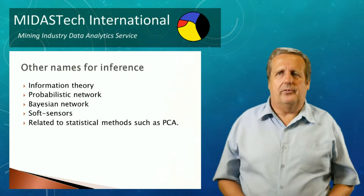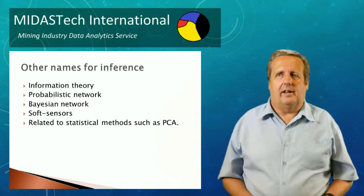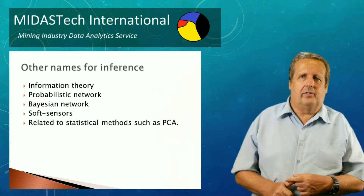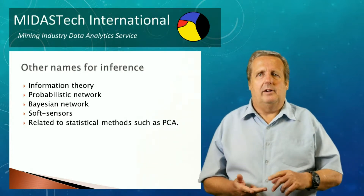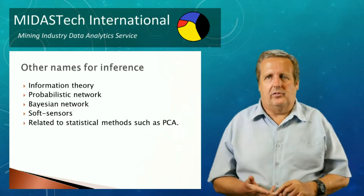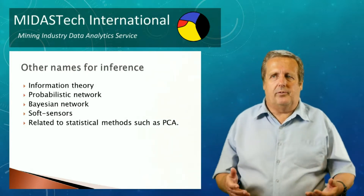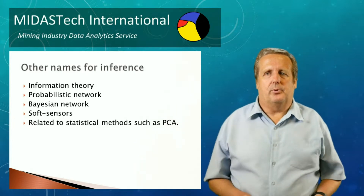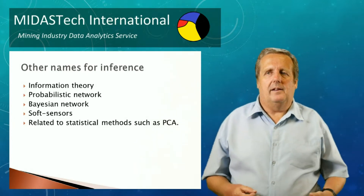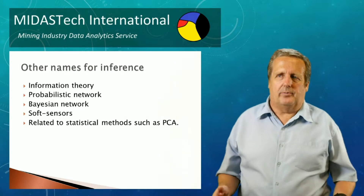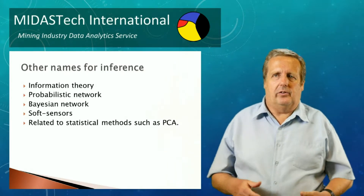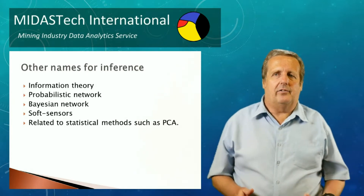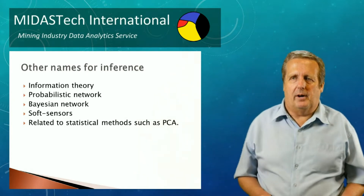There are other names for inference, related to the domain in which they are used: information theory, probabilistic network, Bayesian network, and soft sensors. Indeed, there is even a relationship between information theory and normal statistical methods such as principal component analysis. In this presentation we do not explain information theory or any of the other theories in depth, but such explanations are available in other presentations by MidasTech.